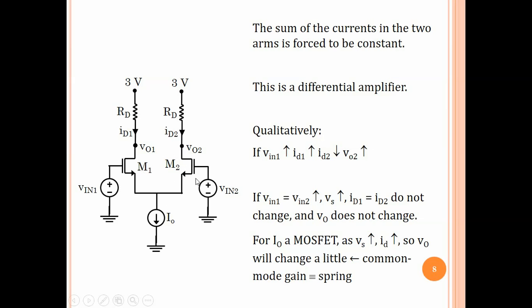Now, suppose both V_in1 and V_in2 increase together by the same amount. As we have seen before and we will see in more detail in the next lecture, if both increase by the same amount, then the source voltage, the common source voltage, will increase by the same amount as the gate voltages have changed such that the currents in both the branches remain constant and the sum remains I0. Therefore, the voltages V_O1 and V_O2 don't change because the currents have remained constant. That is again a property of having equal voltages being applied.